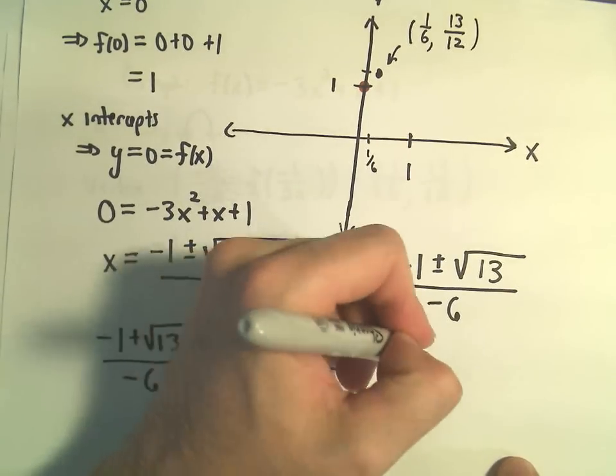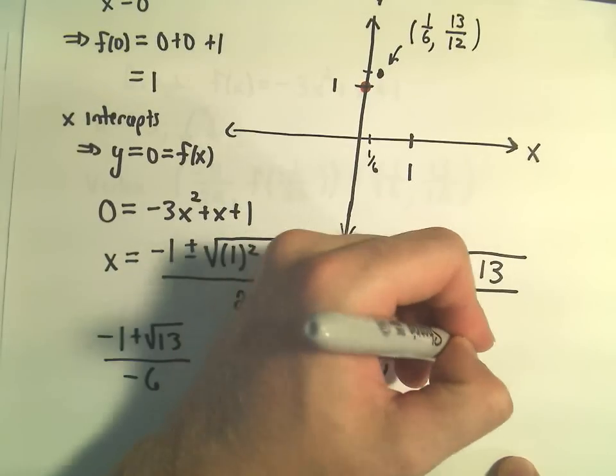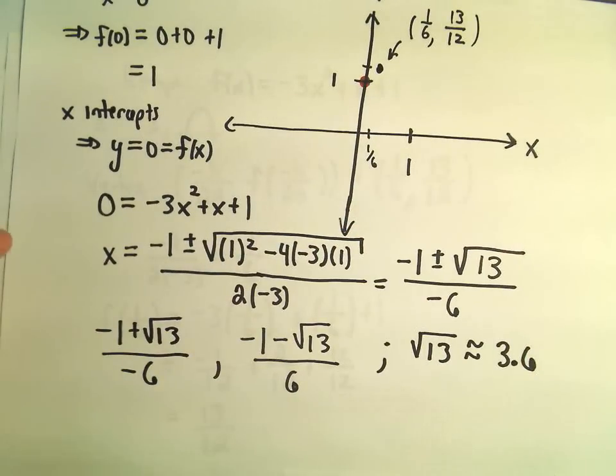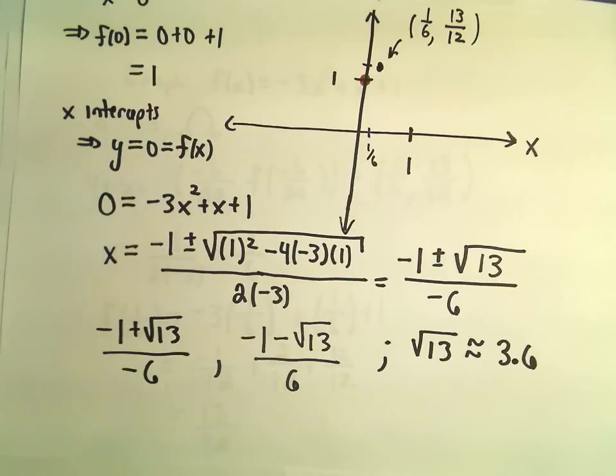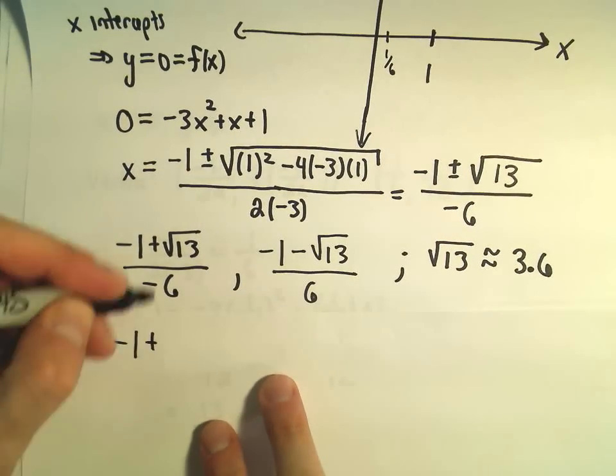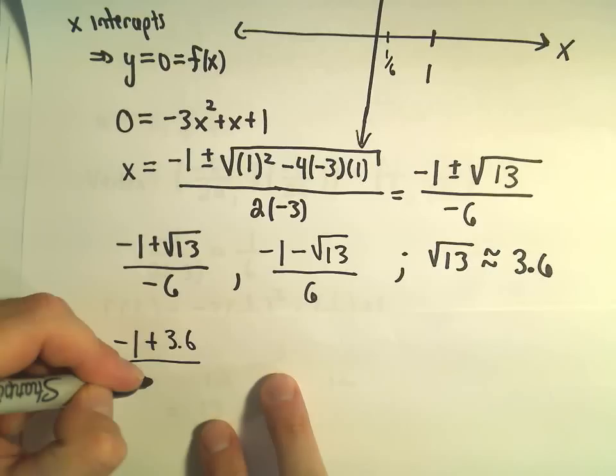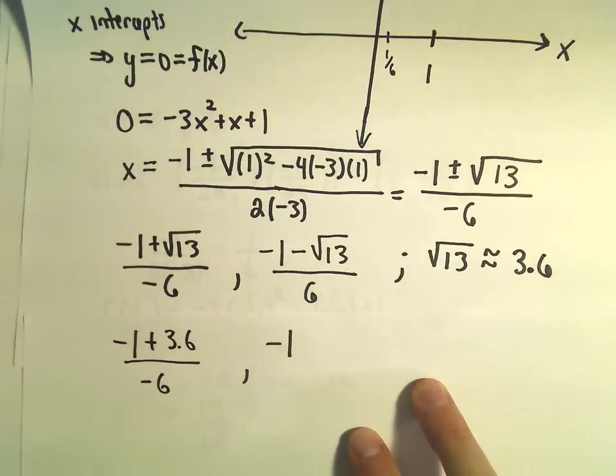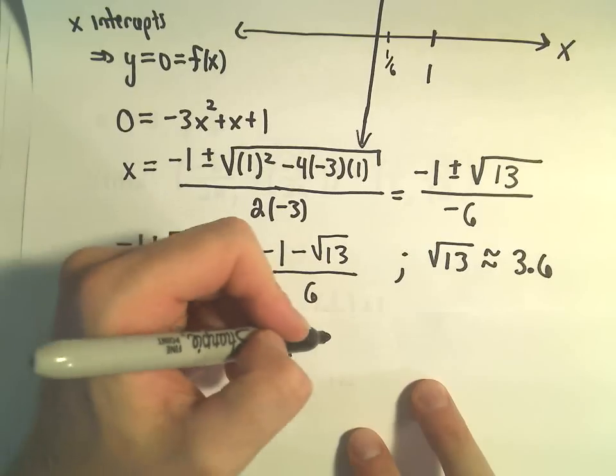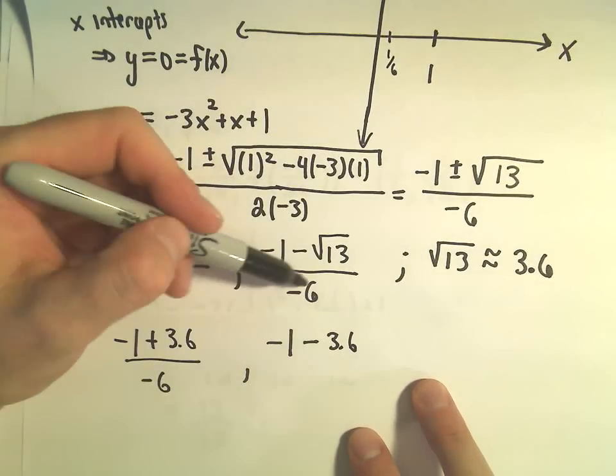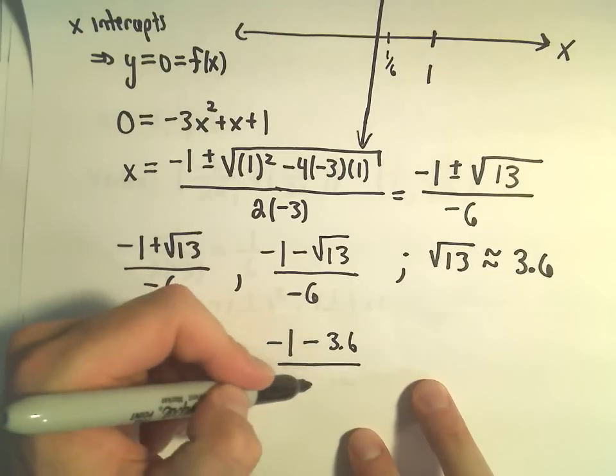I used a little calculator here. The square root of 13 is going to be roughly equal to, I got 3.6. So I'm going to use that and just do a little bit of arithmetic here. So let's see. Negative 1 plus 3.6 over negative 6 will be one of our x-intercepts, or an approximation to it. Negative 1 minus 3.6. I left my negative off up here on this one. Sorry about that. So they're definitely both divided by negative 6.